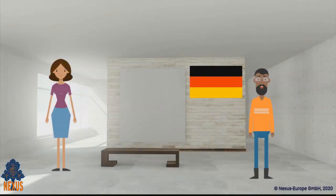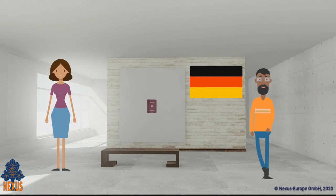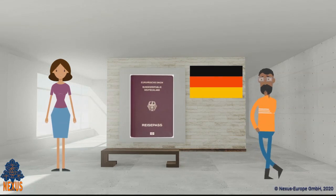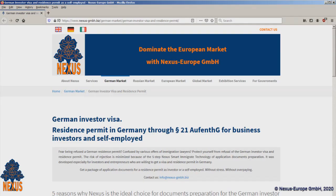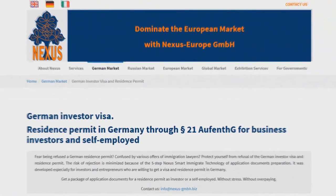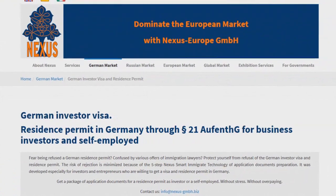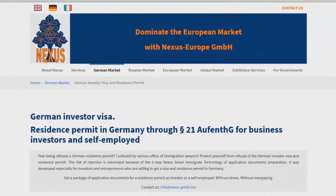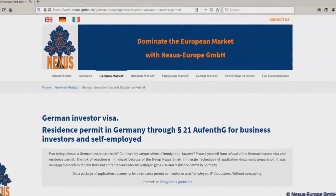Is there anything else I should consider before choosing the company form? A foreign person should consider his or her intention to apply for German residence when forming a company in Germany. You can find the information on getting German residence as a self-employed in the German market section on our website.